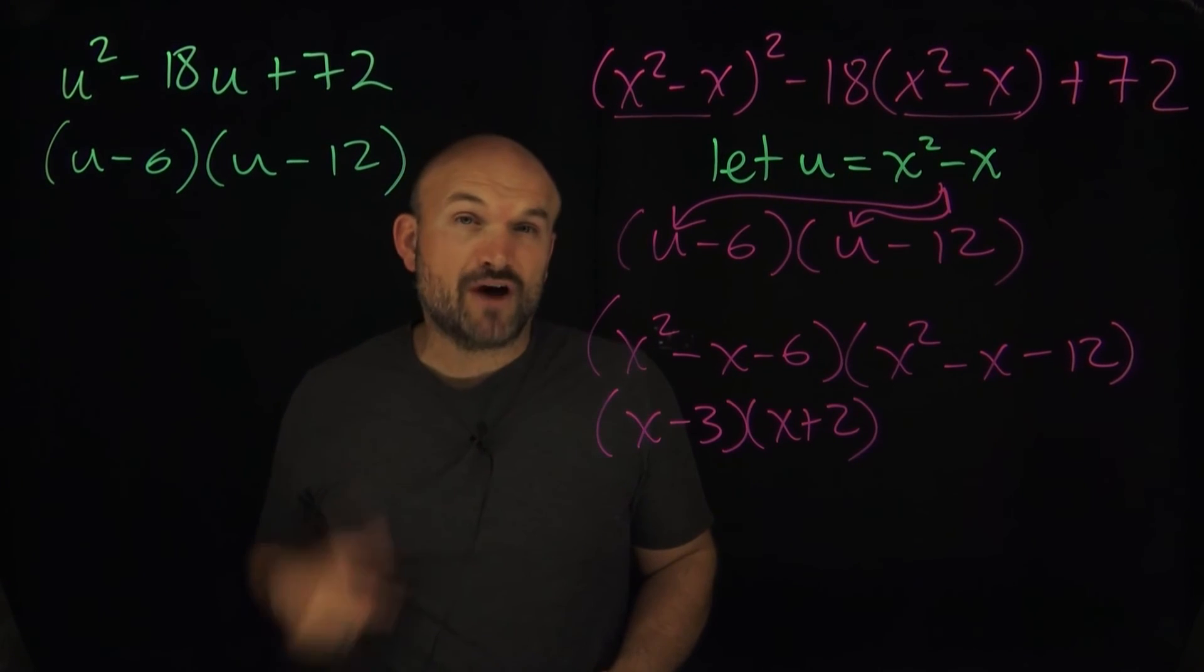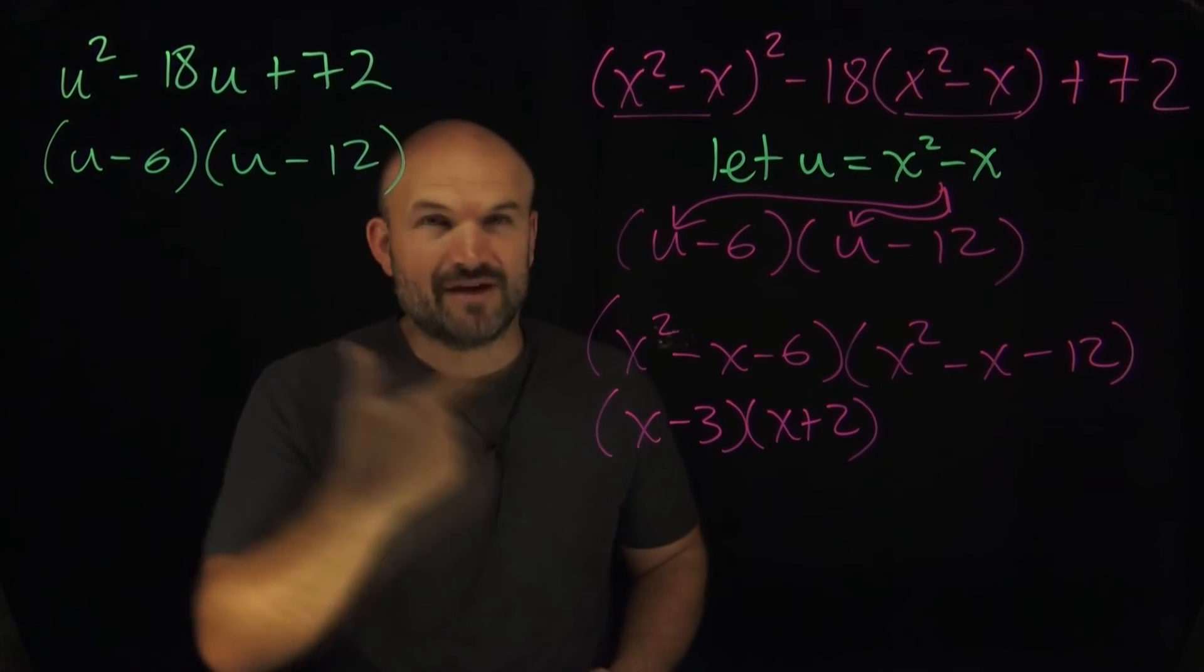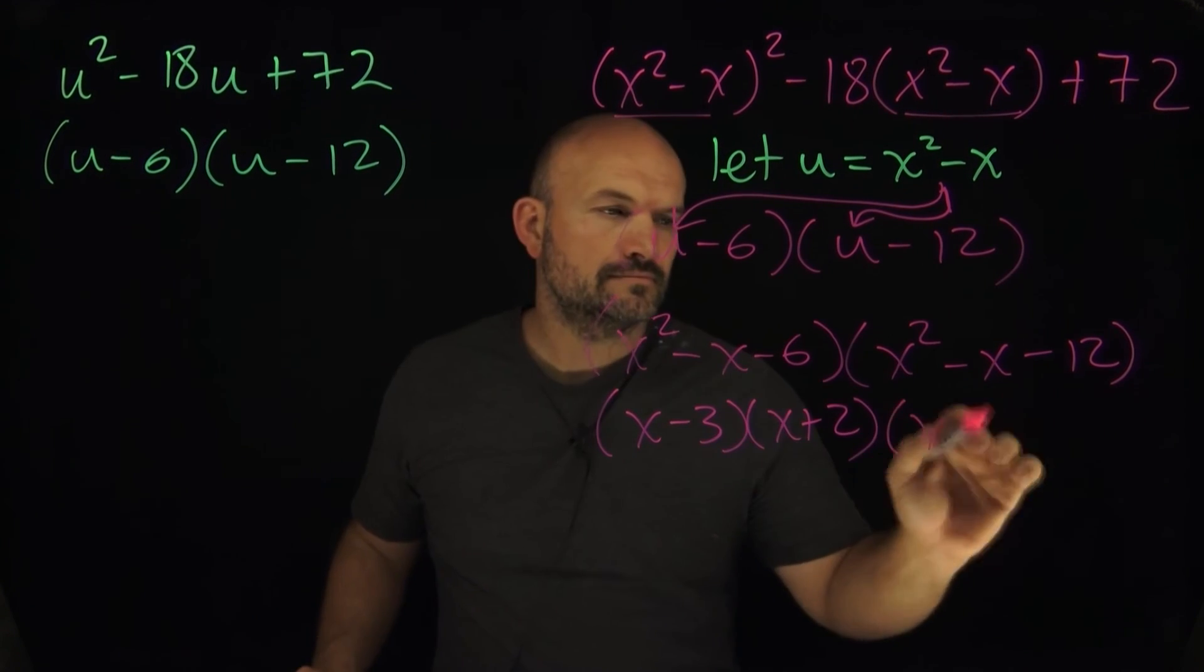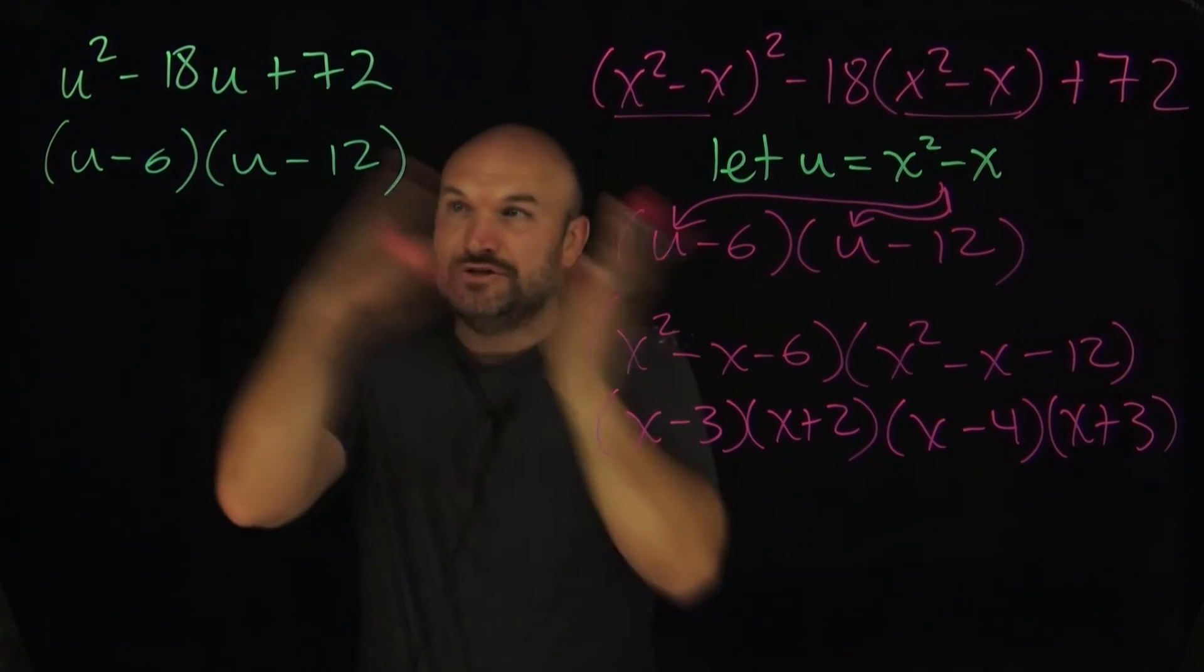And then over here I'm looking at what two numbers multiply to give me negative 12. They also have a difference of 1, so I'm thinking 4 and 3. Since my middle term is negative, I want the larger number to be negative, so that's gonna be (x-4) and (x+3).